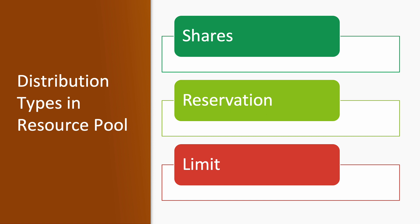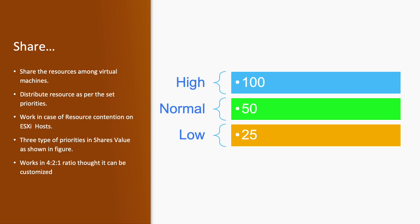Distribution types in resource pool: we have three types of distribution. One is share, the second is reservation, and the third is limit. Share has three values: high, normal, and low, with a ratio of 4, 2, and 1 respectively.